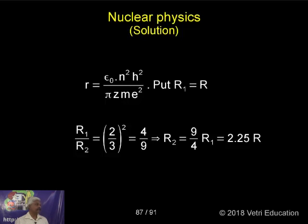Therefore, R1 by R2. So this is the value of R capital R. Remember everything. 2 by 3 whole squared. Others are constant.